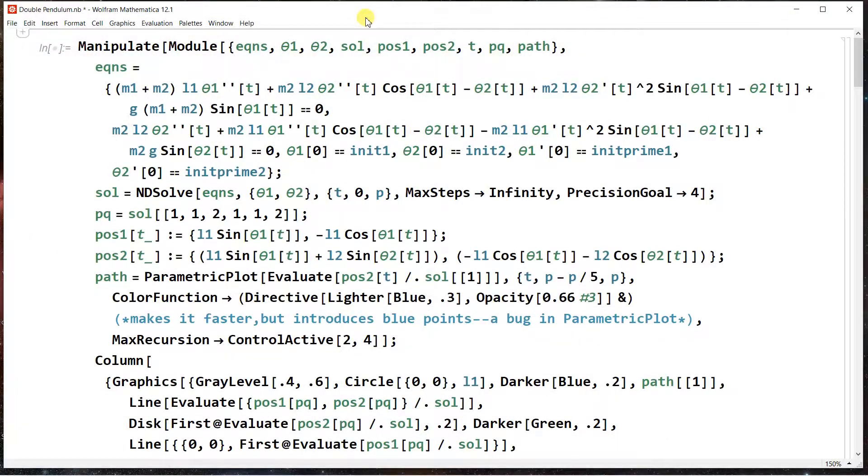In Mathematica, I have the double pendulum workbook that I've prepared. And I've made a module, a manipulate module. And you have your local variable designation list up here. And then you have your equation. And you'll recognize this M1 plus M2 L1 theta double dot plus M2 L2 theta 2 double dot cosine of theta 1 minus theta 2 plus G M1 plus M2 sine of theta 1 equals 0.